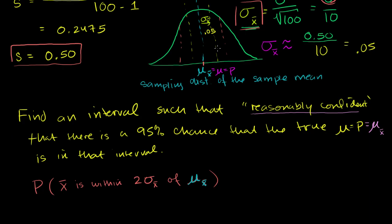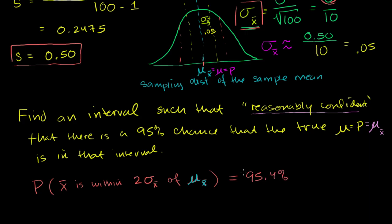In general, if you haven't committed this to memory already, it's not a bad thing to do: for a normal distribution, the probability of taking a sample within two standard deviations is about 95%. To be more accurate it's 95.4%, but roughly 95% is all that matters here, because we have this vague language 'reasonably confident' and we have to estimate the standard deviation anyway. Two standard deviations and 95% are what people equate with each other.